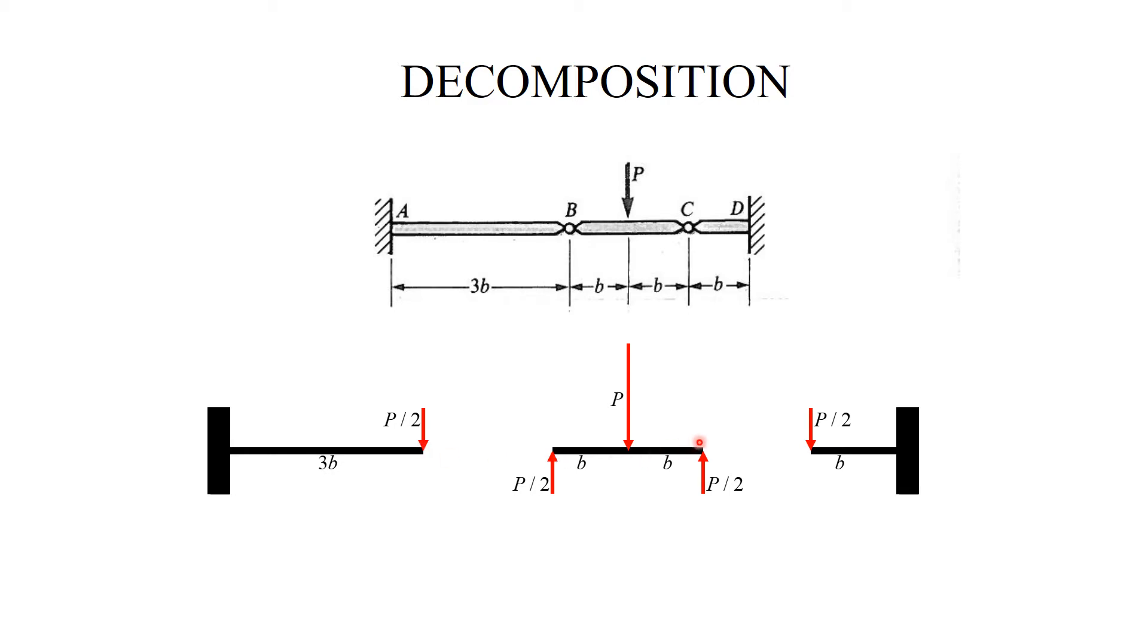At C, there is also movement down, which is dictated by the deflection of the right beam. So we have three superpositions: the middle beam bending, the deflection of the left hand at B, and the deflection of the right hand at C.